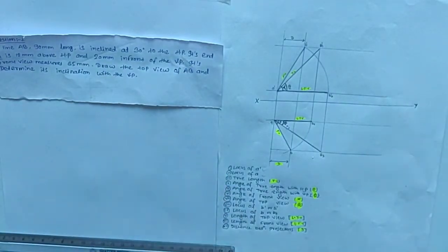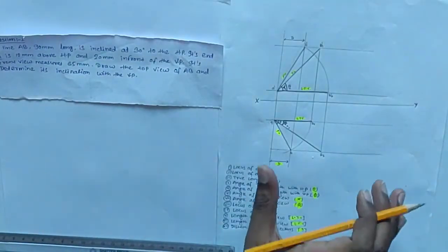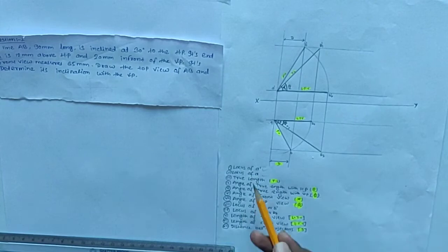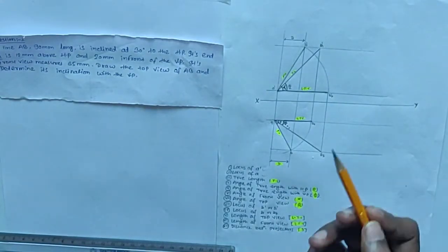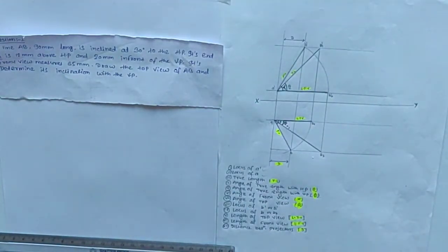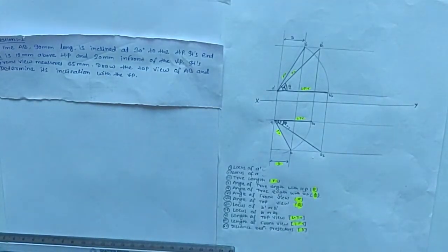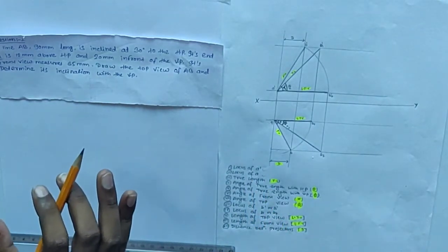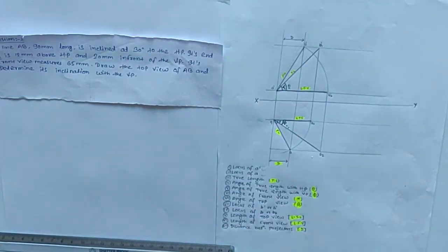This question and the projection diagram are listed here with 12 data points. In projection of a straight line, these 12 data points are what we work with. In a question, not all 12 will be available — typically any 5 of these data points will be given, and from those we draw what is asked.